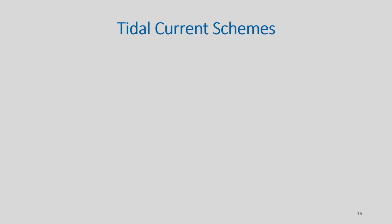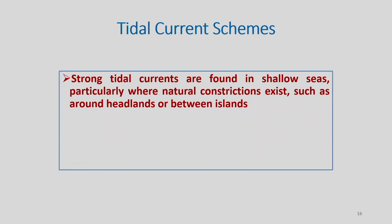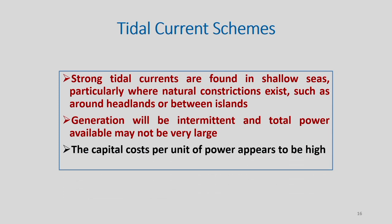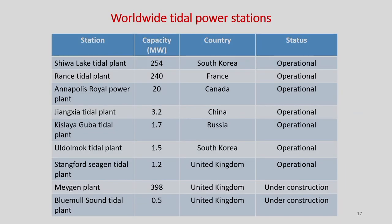There is also the tidal current scheme, where strong tidal currents are found in channels, particularly where natural constrictions exist such as around headlands or between islands. Generation is intermittent and total power available may not be very large. Capital cost per unit of power is high, and identifying an appropriate site is critical. Operational plants exist in South Korea, France, Canada, Russia, China, and the UK.